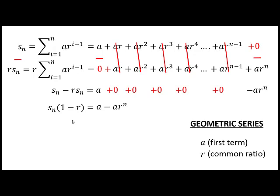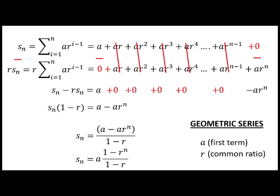Now all we need to do is divide by 1 minus R on both sides and we get our value for S of N. If we simplify by factoring out A, we get our final formula: S of N equals A times (1 minus R to the N) over (1 minus R). This is actually pretty unique — we can solve for any partial sum value for any N, and this only works for a geometric series.